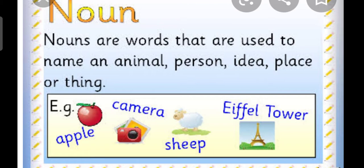So now what is noun? I hope you know what is noun. Nouns are the naming words. Nouns are words that are used to name an animal, person, idea, place or thing. Examples: apple, camera, sheep, Eiffel Tower.